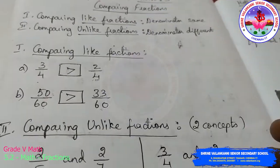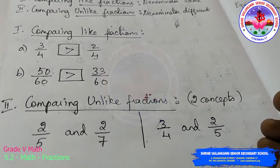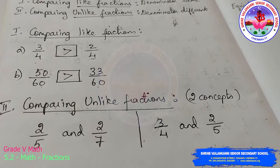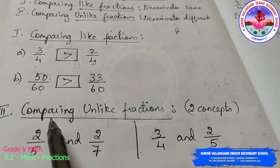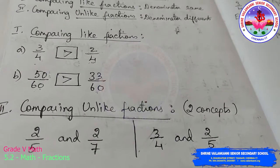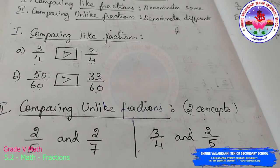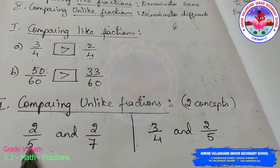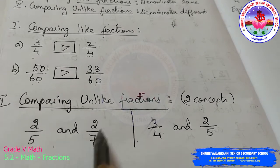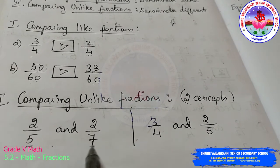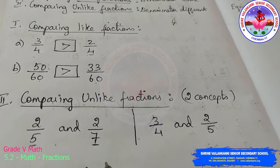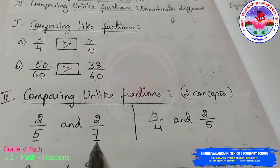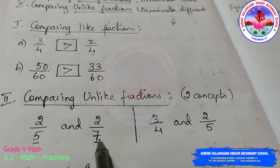Now I will move on to comparing unlike fractions. Unlike fractions means the denominators of the given fractions will be different. Comparing unlike fractions has two concepts. The first example is 2/5 and 2/7. If you see the denominators, they are different. Since the denominators are different, it is absolutely an unlike fraction.